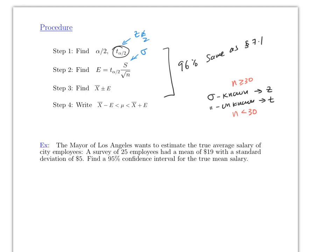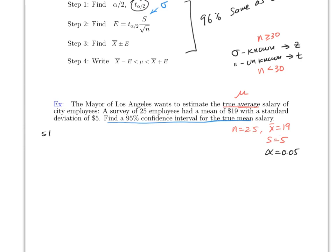Now let's look at an example. The mayor of LA wants to estimate the true average wage (mu) for city employees. A survey of 25 employees — n is 25, which is less than 30 — found a mean of 19 and a standard deviation of 5. Note that this is s, not sigma, because sigma is unknown. The question asks for a 95% confidence interval, so alpha equals 0.05.